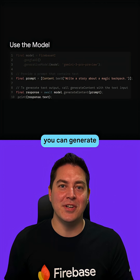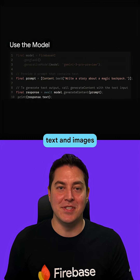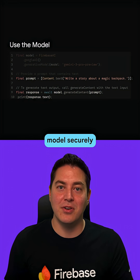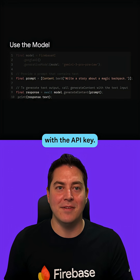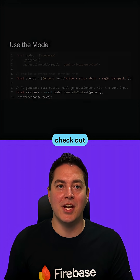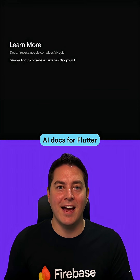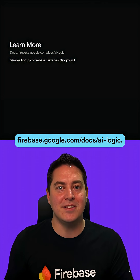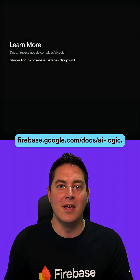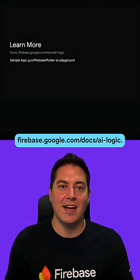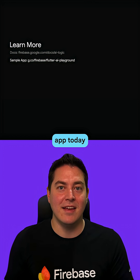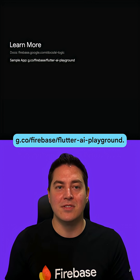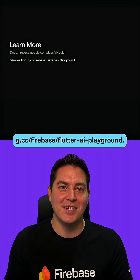And with that, you can generate text and images by sending prompts to the model securely without having to ship your app with the API key. If you want to learn more, check out the Firebase AI Docs for Flutter at firebase.google.com/docs/AI-logic. You can also try out the sample app today at g.co/firebase/flutter-AI-playground.